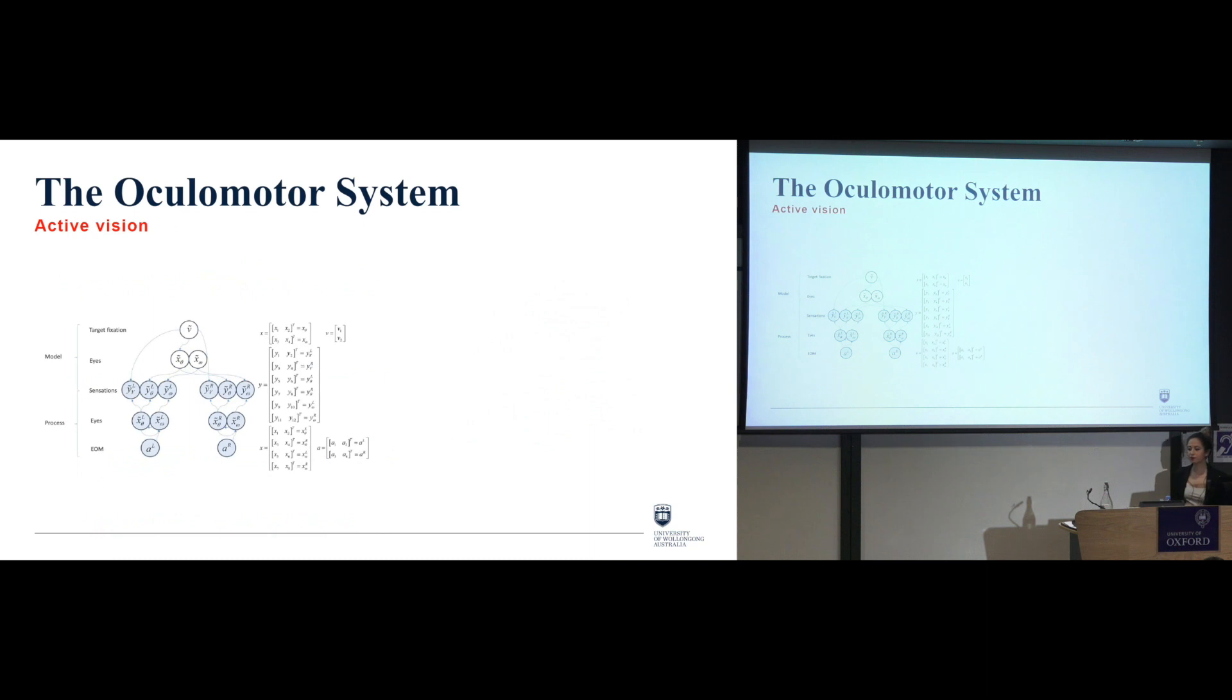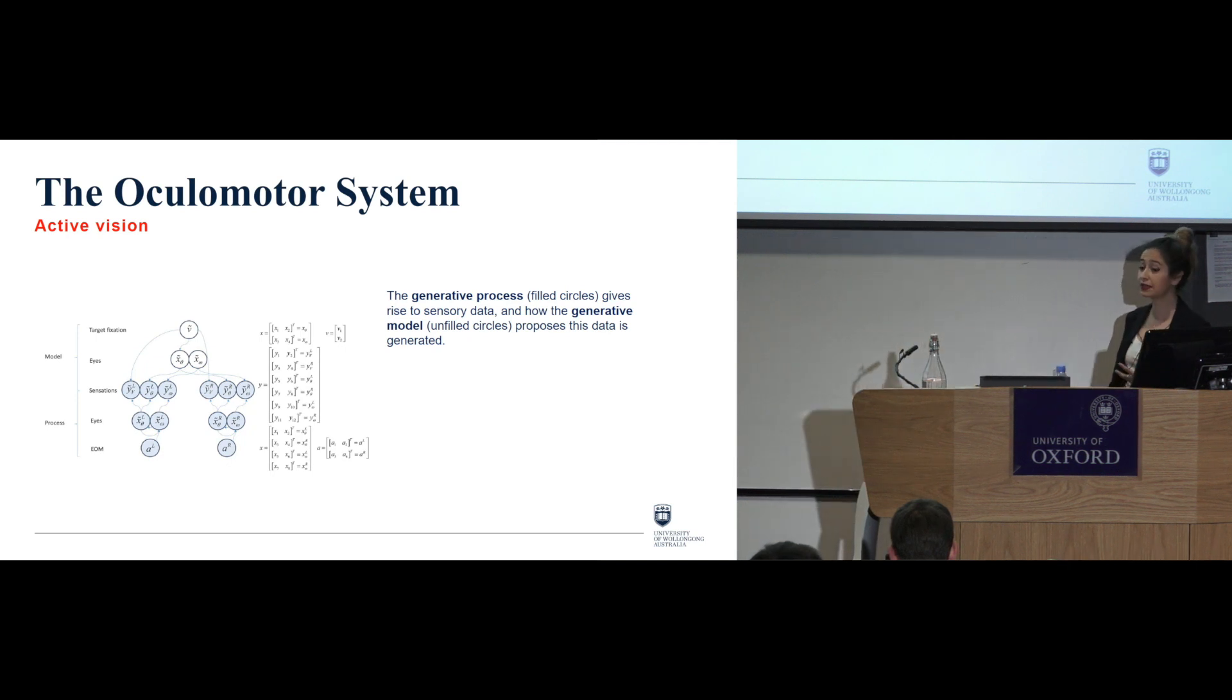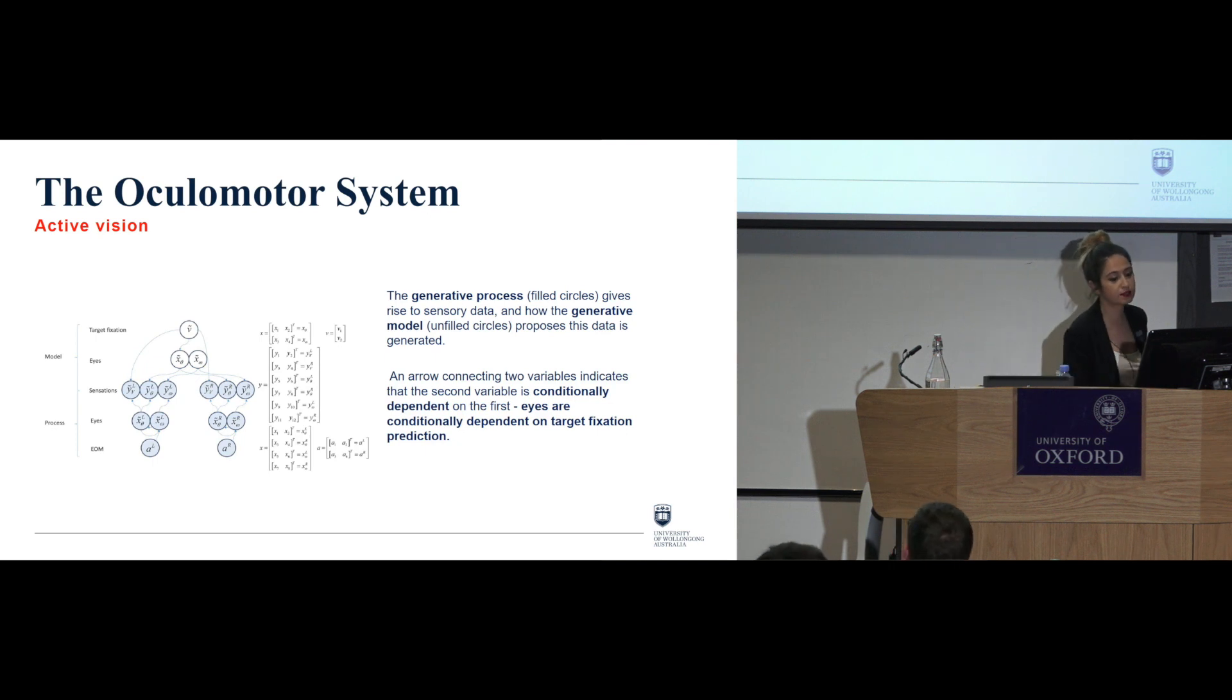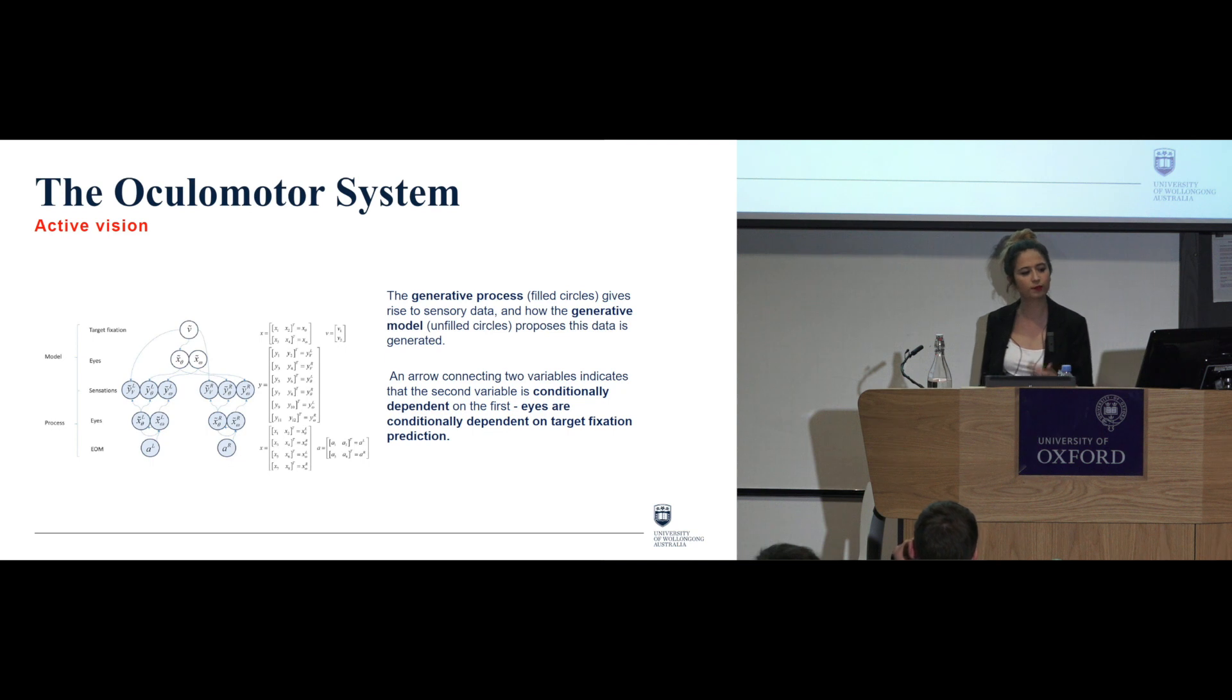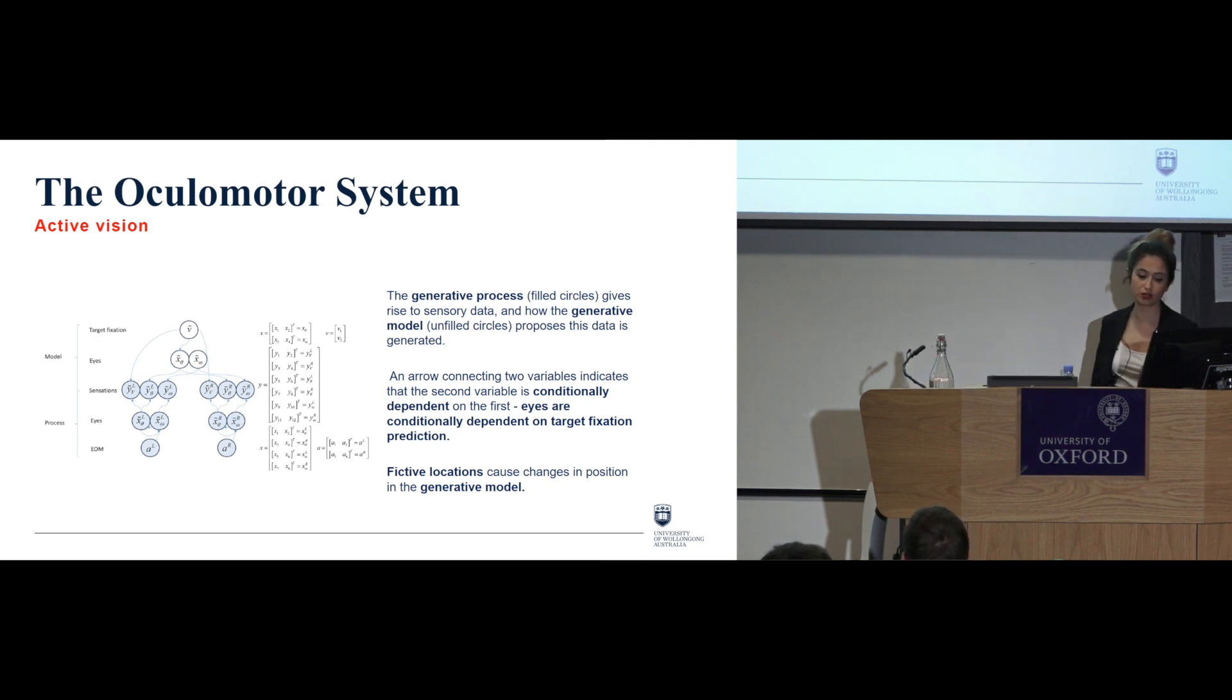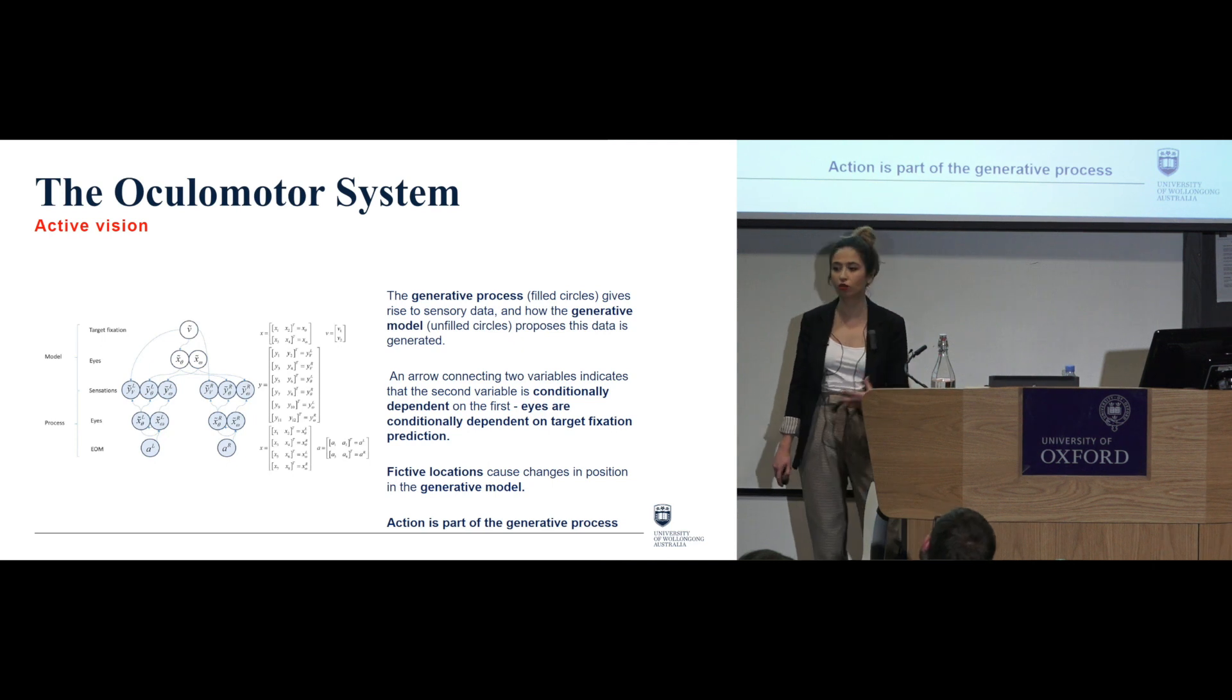Okay, now this becomes a form of what Thomas Parr and Carl Friston call the active vision, and this is the bit that I'm very interested in working on and building from. So this is the idea that this active vision is a generative process, these filled circles are what gives rise to the sensory data, and then we have on the other hand the generative model which is the unfilled circles which proposes this data is generated. Now an arrow connecting two variables indicates that the second variable is conditionally dependent on the first, and this is what I'm particularly interested in because this means that eyes are conditionally dependent on target fixation prediction. Okay, so these fictive locations then will cause changes in position in the generative model. And which brings us to conclude that then action is part of this generative process.